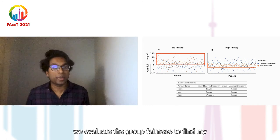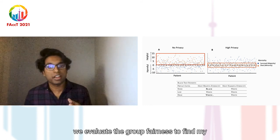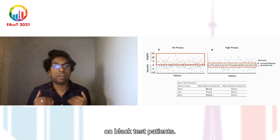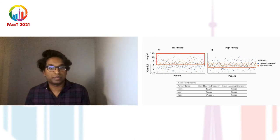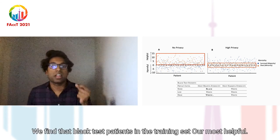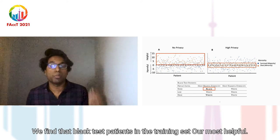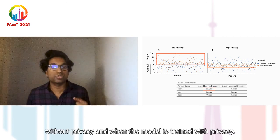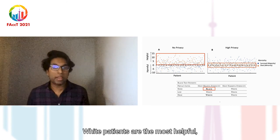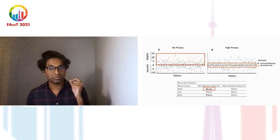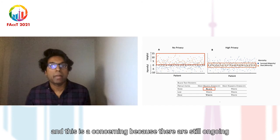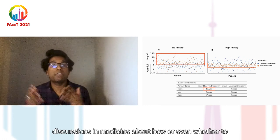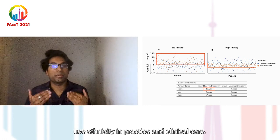We also evaluate group fairness defined by influence, specifically the influence that white patients and black patients in the training set have on black test patients. We find that black patients in the training set are most helpful when the model is trained without privacy, but when the model is trained with privacy, white patients become the most helpful. This is concerning because there are ongoing discussions in medicine about how or even whether to use ethnicity in clinical care.